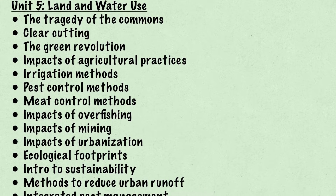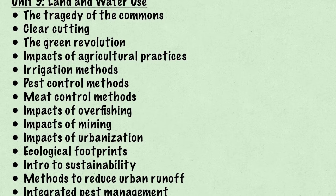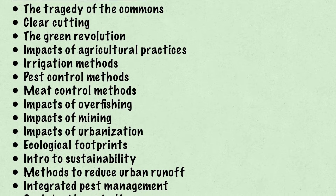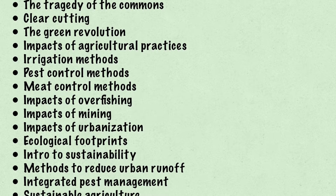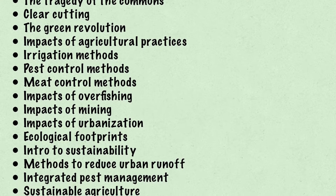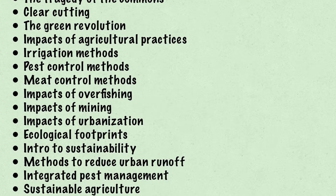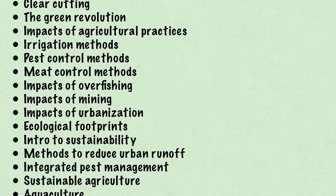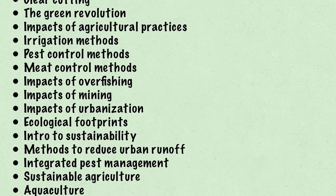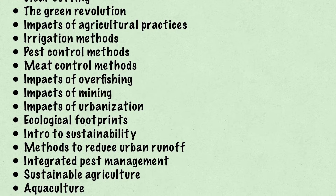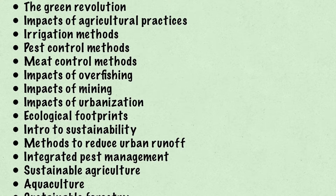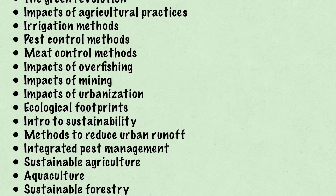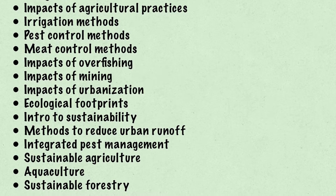Next we have Unit 5: Land and Water Use, including the tragedy of the commons, clear cutting, the Green Revolution, impacts of agricultural practices, irrigation methods, pest control methods, impacts of fishing, impacts of mining, impacts of urbanization, ecological footprints, interest in sustainability methods, reduce urban runoff, integrated pest management, sustainable agriculture, aquaculture, and sustainable forestry.